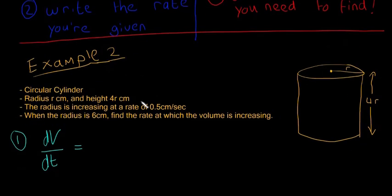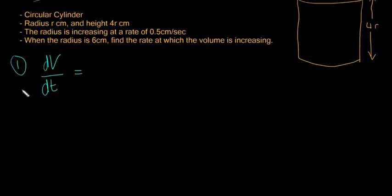Write the rate that we're given. Number two, the rate that we're given is the radius is increasing at a rate of 0.5 centimeters per second. So we're going to write dr/dt is equal to 0.5.